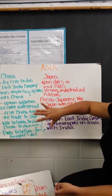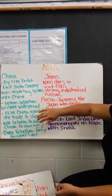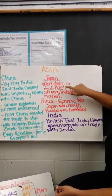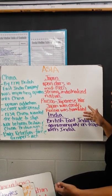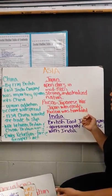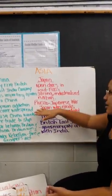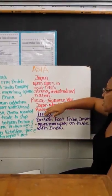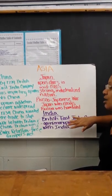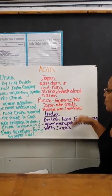China will eventually become a communist nation, which we'll talk about after World War II. Looking at Japan, they opened their doors in the mid-1800s and became a strong industrialized nation with the help of the United States. Being next door to Russia, they went to war with Russia in the Russo-Japanese War. Japan won very easily, and Russia was humiliated. There was no land exchanged or changed during this war.